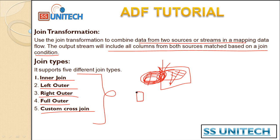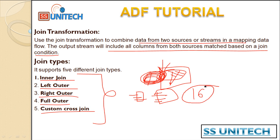For the custom cross join, if your left table has four rows and your right table also has four rows, then the output will be 16 rows. So this is the joins inside SQL Server, and the same applies inside Azure Data Factory. Now let's go to the browser and try to implement this practically.